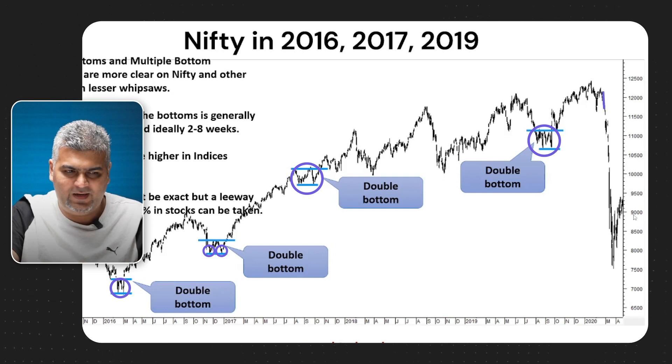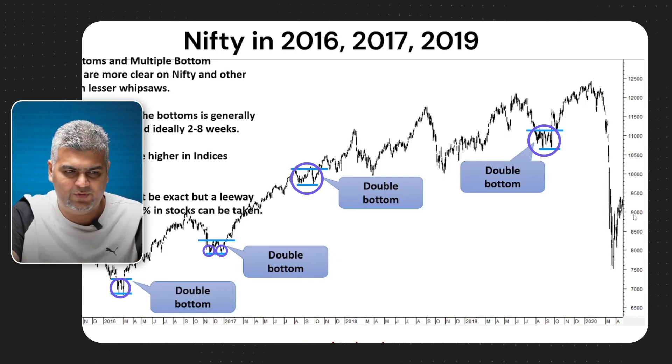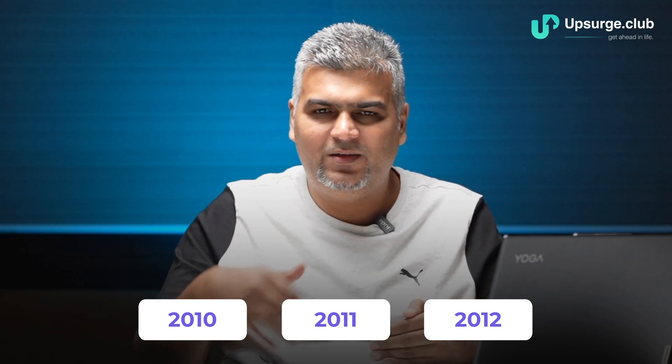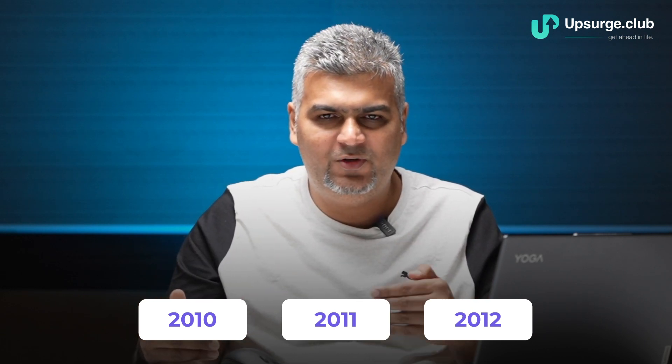We have also seen double bottoms in 2010, 2011, and 2012. In 2011, the bottom was closer to 4800 — same bottoms and then a rally again. When it is tough to visualize that the trend will continue after the bottoms are made, simply keep it to the pattern: wait for confirmation of the interim highs being crossed, then ride it as long as it makes higher tops and higher bottoms. A classical double bottom is simple to see and works really well.